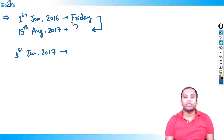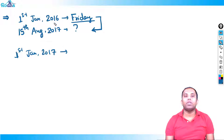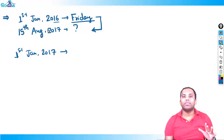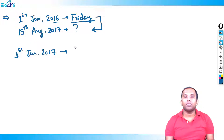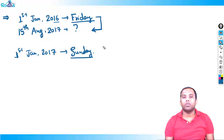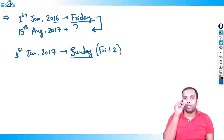1st Jan 2016 was Friday. From 1st Jan 2016 to 1st Jan 2017, one complete year — how many odd days? 2016 was a leap year because 16 is divisible by 4. Leap year means two odd days. So Friday plus two becomes Sunday. So 1st January 2017 was Sunday.